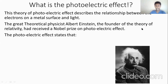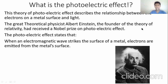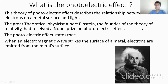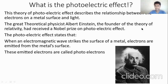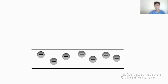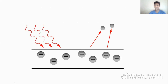The photoelectric effect states that when an electromagnetic wave or radiation is striking the surface of a metal — it can be any metal, it can be zinc or copper or anything — the electrons are ejected or emitted from the surface of the metal. So what happens is a wave or radiation strikes the metal and the electrons are ejected. These ejected electrons are called photoelectrons.